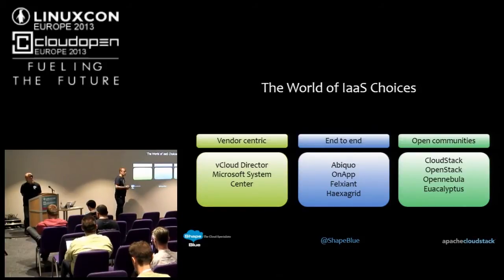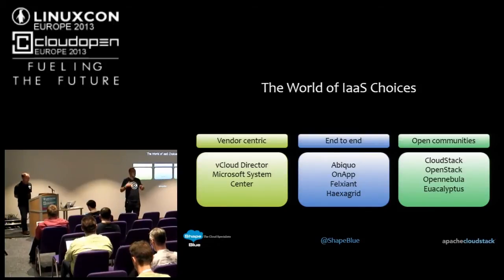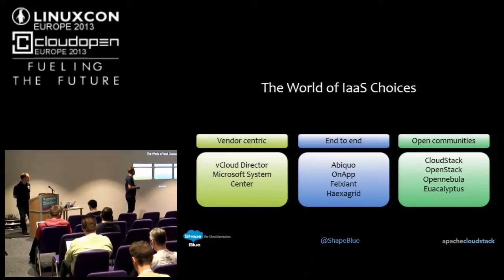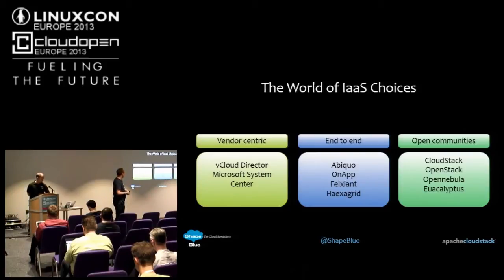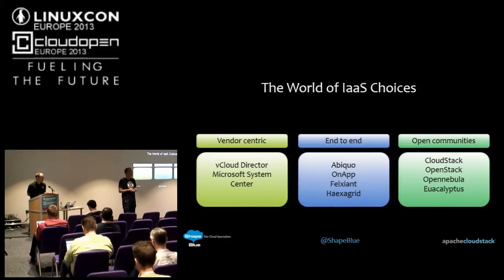VMware has a technology called vCloud Director, and System Center from Microsoft does a similar sort of thing, allowing self-service access to infrastructure. Then there's a whole bunch of guys doing what I call end-to-end solutions — like Abiquo and Flexiant. These were companies that sprung up about six or seven years ago, aimed predominantly at service providers who wanted to do an Amazon-style offering. These are out-of-the-box solutions that handle the whole credit card and customer portal piece, aimed firmly at the service provider market.